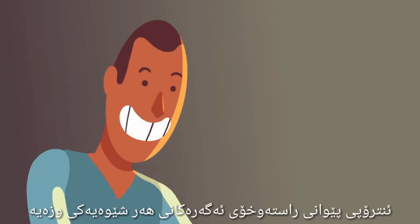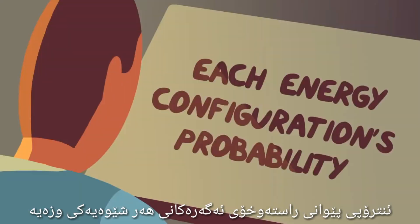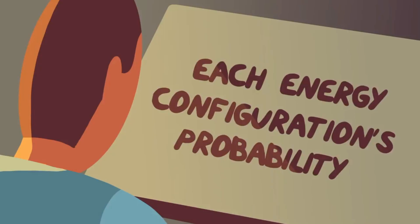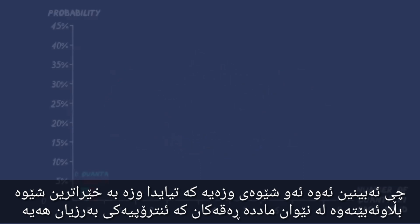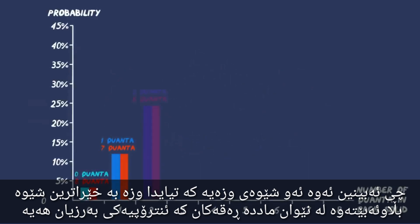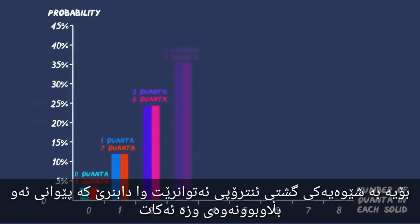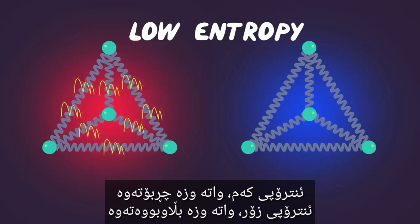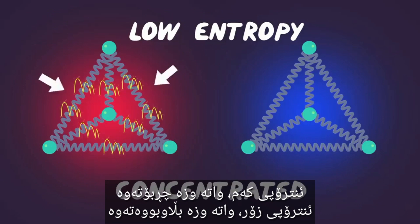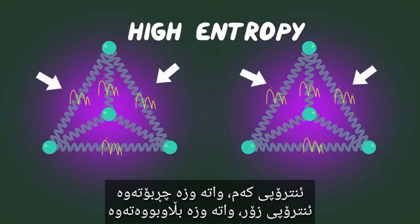Entropy is a direct measure of each energy configuration's probability. What we see is that the energy configuration in which the energy is most spread out between the solids has the highest entropy. So in a general sense, entropy can be thought of as a measurement of energy spread. Low entropy means the energy is concentrated; high entropy means it's spread out.